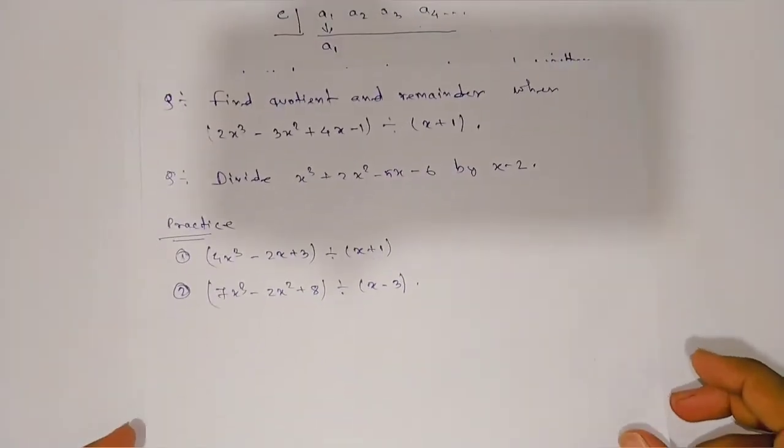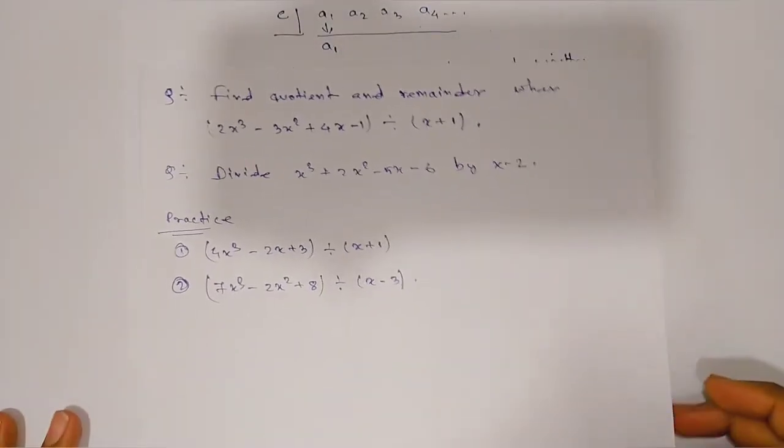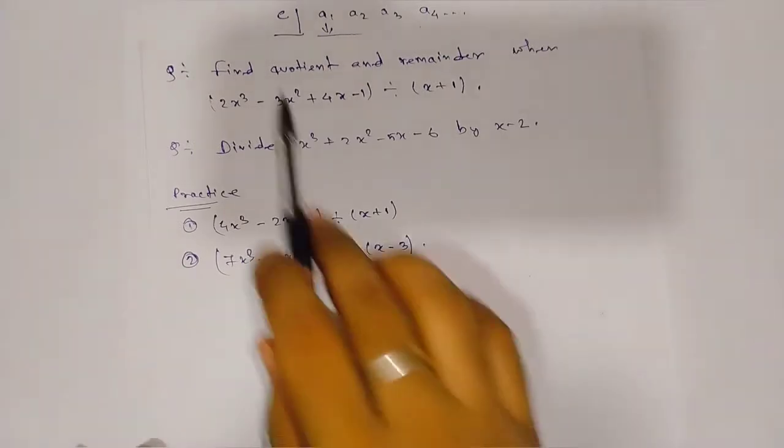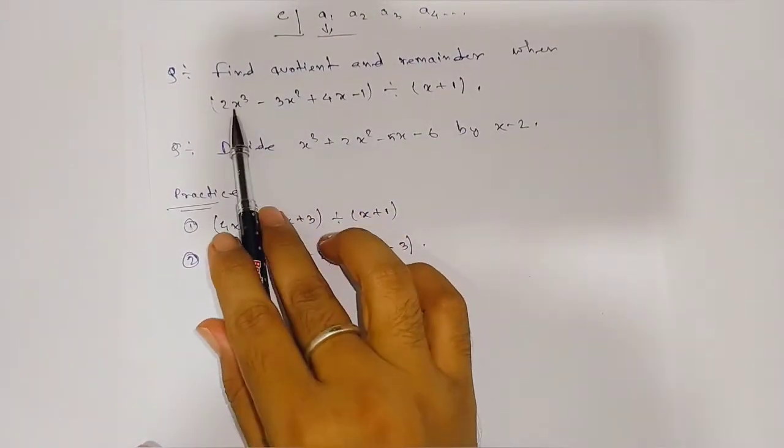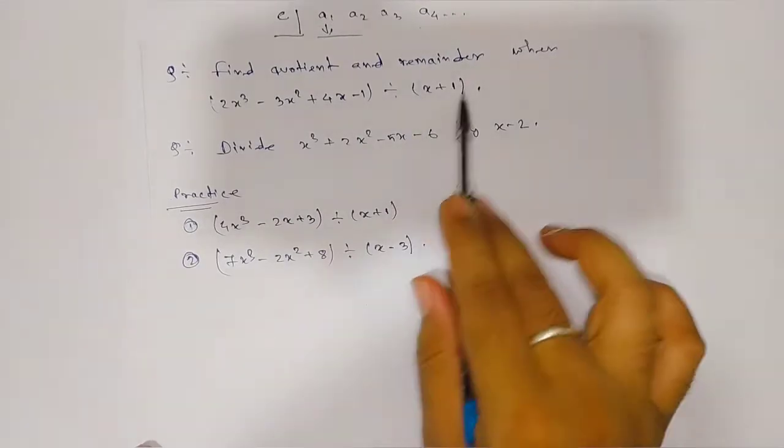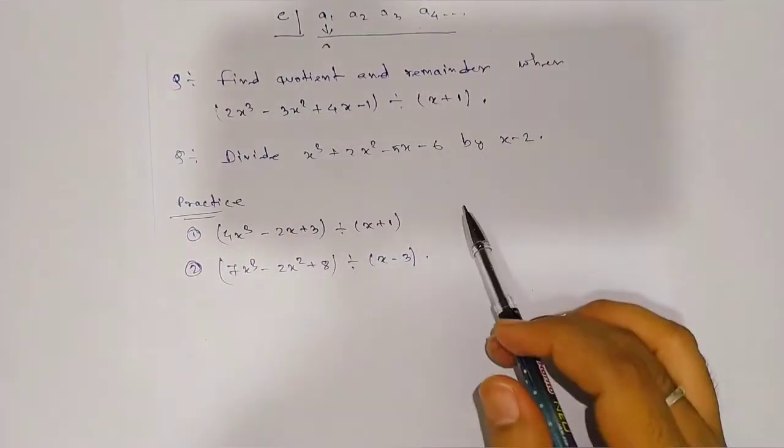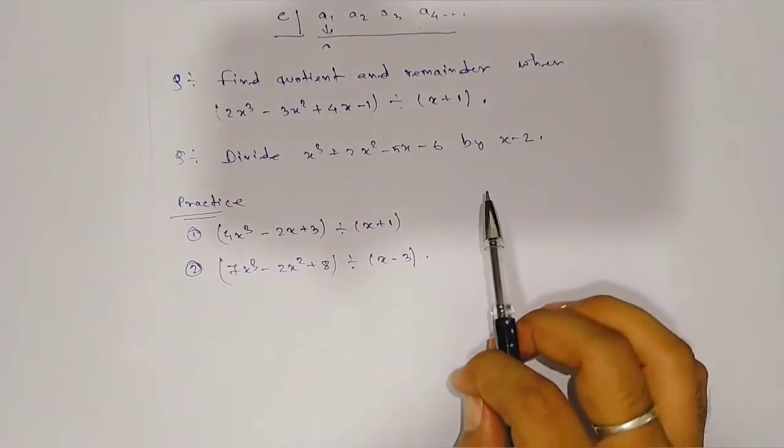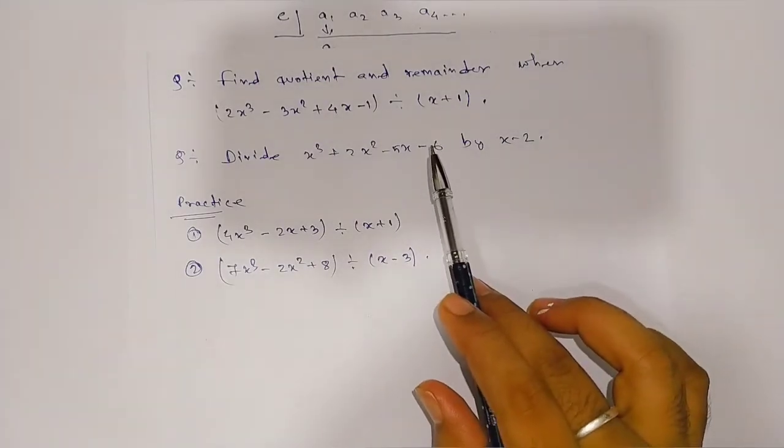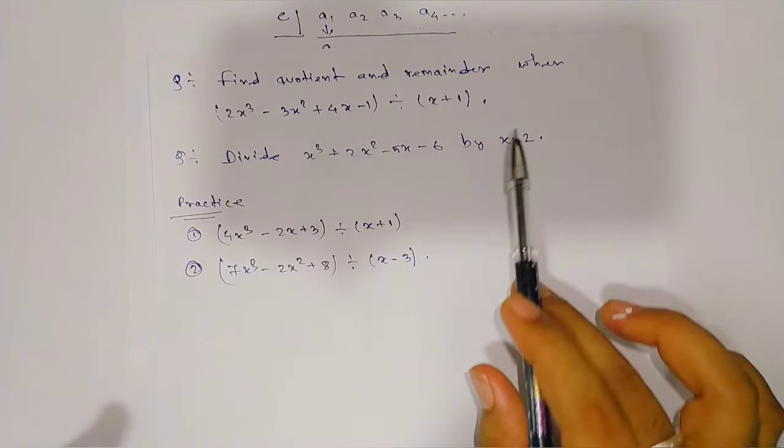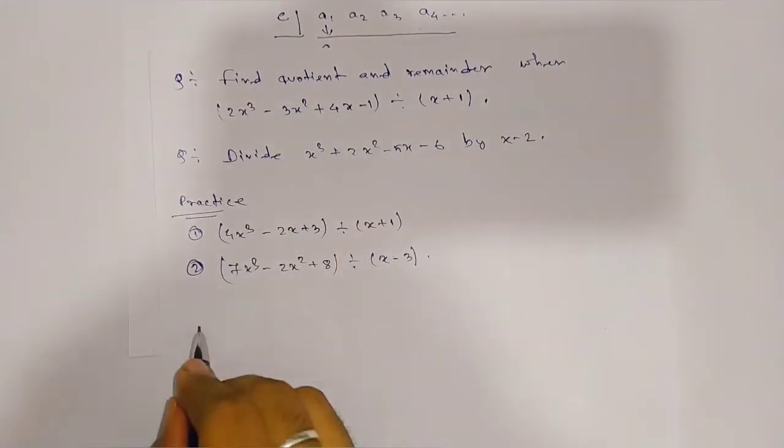Here we have a problem using synthetic division to find the quotient and remainder when a polynomial is divided by a binomial. Remember, you can apply remainder theorem only to get remainder, but use synthetic division to get both quotient and remainder.